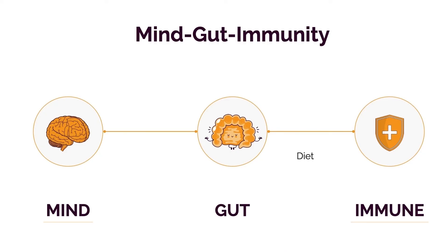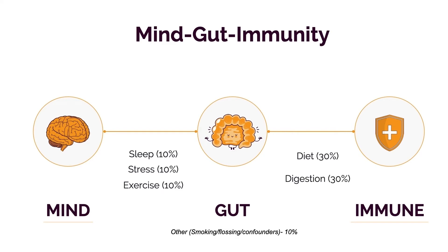If I had to assign percentages, diet is roughly a third and digestion is roughly a third, so combined they represent more than half the impact. That's because most of your immune system is in your gut, and most of your genetic diversity is in your gut in the form of microbes. So what goes in your gut, what lives in your gut, and what leaves your gut determines inflammation. Simple as that.